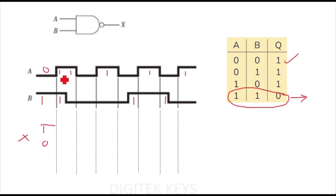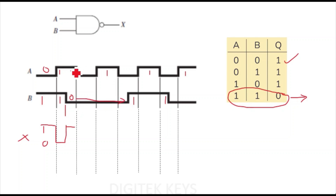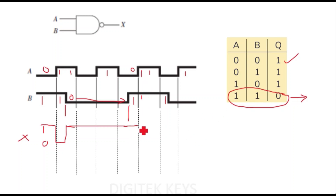At this position, A is 1 and B is 1, so the output becomes 0. It remains 0 until this point only, because after this B has become 0. So the output becomes 1 again here and remains 1, because B is 0 for this whole duration — no need to worry about the value of A. Output stays 1 until this value. Now B becomes 1 again but A is 0 here, so output remains 1. Then A becomes 1, so we have the 1,1 combination and output becomes 0 again. It remains 0 until this point only.